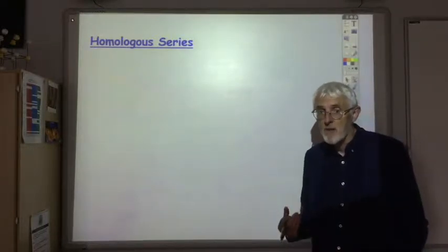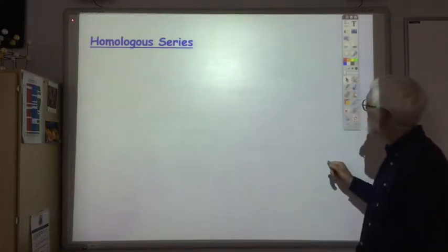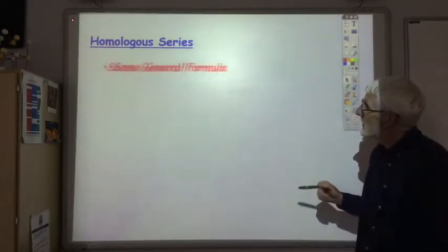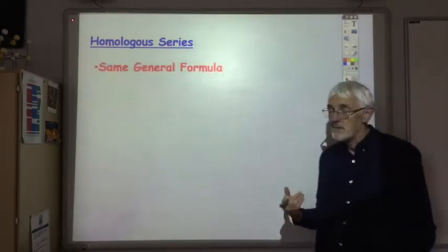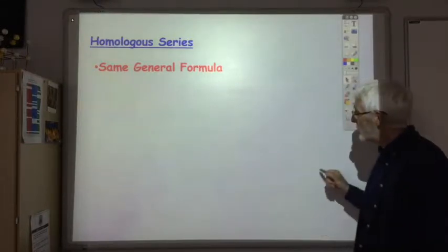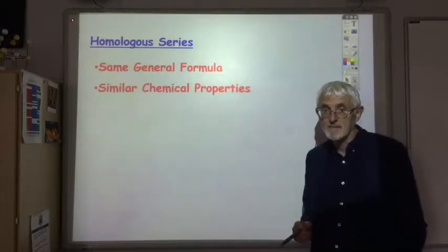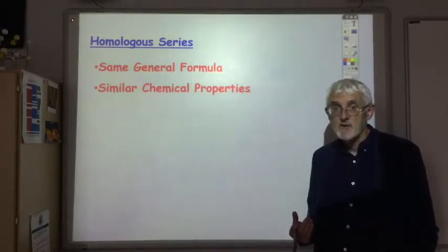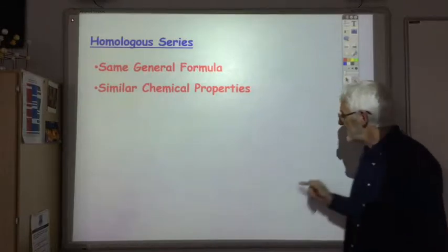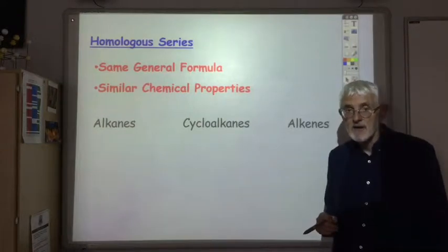To be a member of a homologous series you have to fulfill two different criteria. All members of one homologous series must have the same general formula and they must have similar chemical properties. Over these first two videos we are going to look at three different homologous series: alkanes, cycloalkanes, and alkenes.